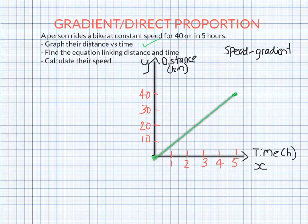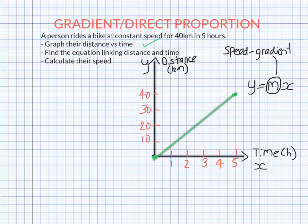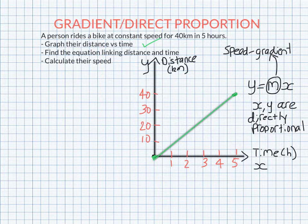Now, what's the equation linking distance and time? So hopefully we know that when you have a line that goes through the origin, it's y equals something times x. That m is actually the gradient. So when we have a line that goes through the origin, y equals something times x, we say that x and y are directly proportional. In this case, x was time and y is distance. So the distance traveled is directly proportional to the time traveled.